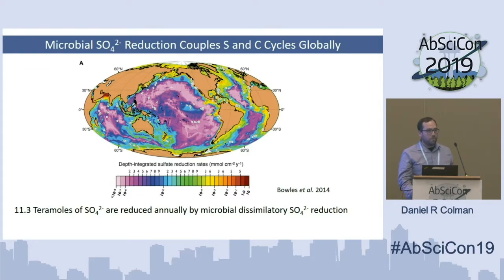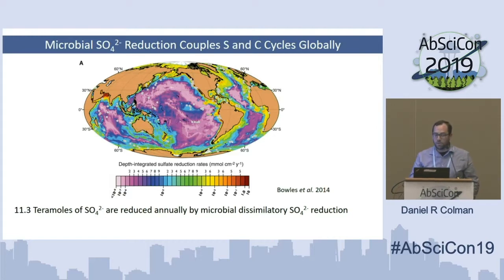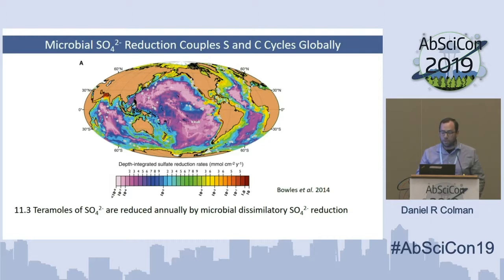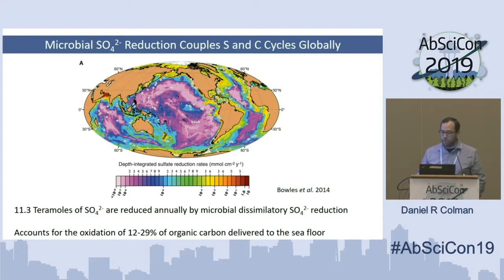Microbial dissimilatory sulfate reduction is an incredibly important process on contemporary Earth. It has the function of coupling both sulfur and carbon biogeochemical cycling on Earth. In fact, over 11 termols of sulfate are estimated to be reduced by microbial dissimilatory sulfate reduction annually, and via the concerted oxidation of organic carbon in sediments, up to about 30% of the organic carbon delivered to the seafloor is actually oxidized via sulfate reduction.